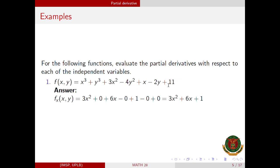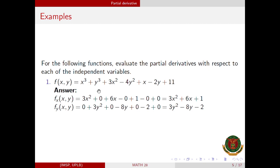Now we solve for the partial derivative of f with respect to y. Going term by term: x cubed is treated as a constant, so that is 0. y cubed gives 3y squared. 3x squared is also a constant, so 0. Negative 4y squared gives negative 8y. x is a constant. And minus 2y gives negative 2. So simplifying, the partial derivative of f with respect to y is 3y squared minus 8y minus 2.